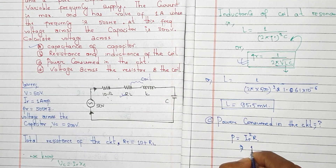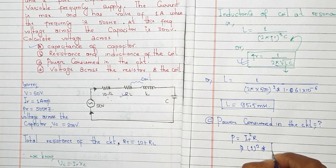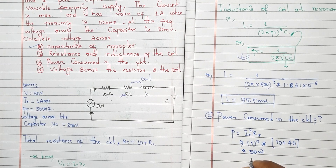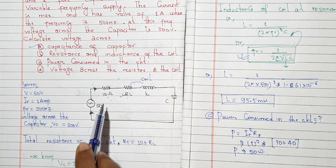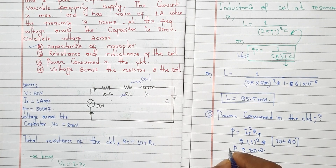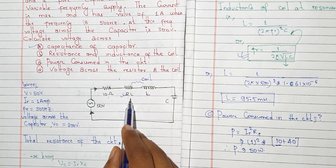Power is I squared times R. To find total power, we need total resistance. The total resistance is 10 plus 40, which gives us 50 watts power consumed in the circuit. The 10 ohm is given, and the coil resistance R_L is 40 ohms, so total power consumed is 50 watts.